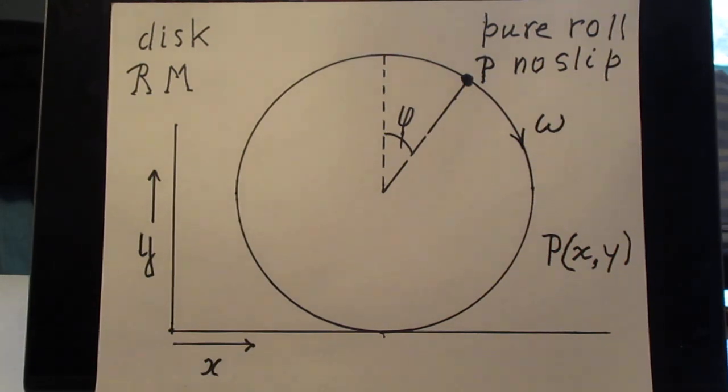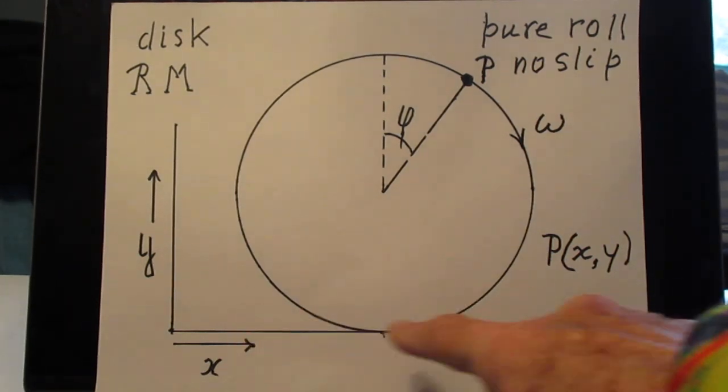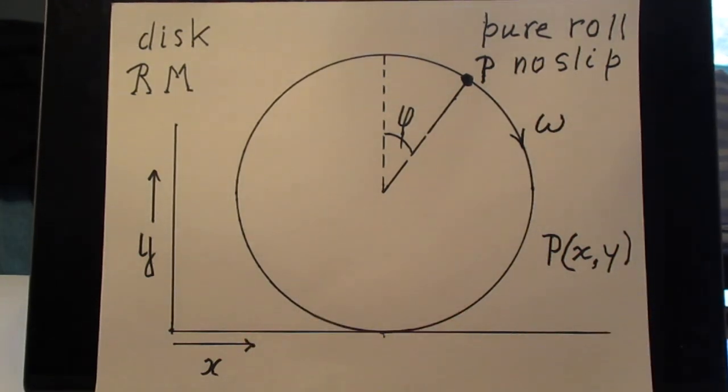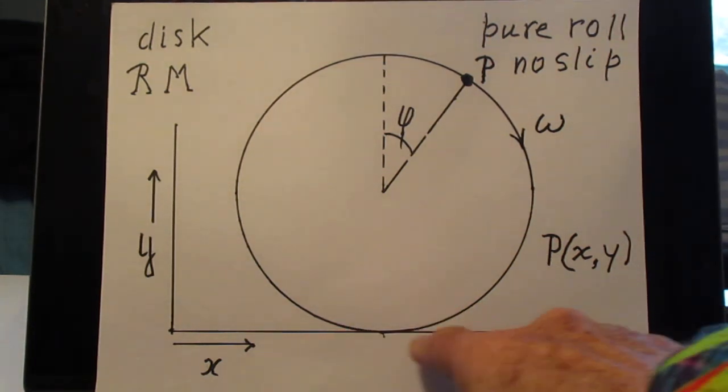So accept the fact that yes there is friction here, but since the wheel, in this case the disc, is in pure roll condition, there is no work done here by the frictional force because there is no slip.